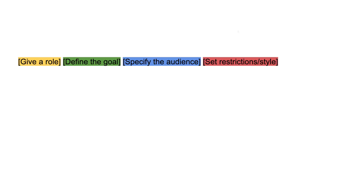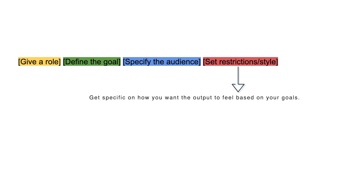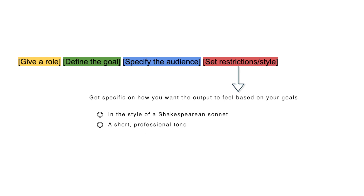Another helpful part of your prompt is to set restrictions, style, or tone. Again, this is not a necessity, but it will help you get more nuanced, detailed responses. When setting restrictions or tone, get specific on how you want the output to feel based on your goals. For example, if you're writing a sonnet you might add 'in the style of a Shakespearean sonnet,' or for a cover letter ask for 'a short, professional tone,' or you may want your LLM to cite scientific sources only.